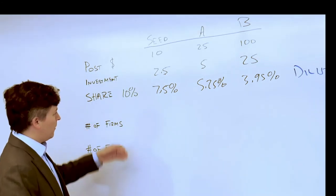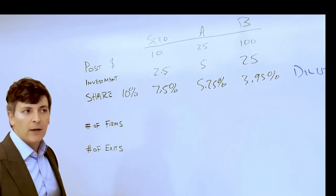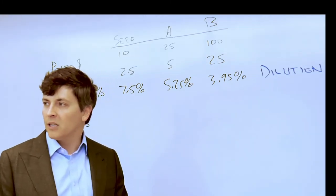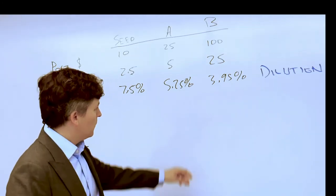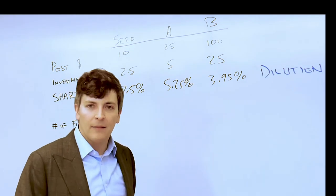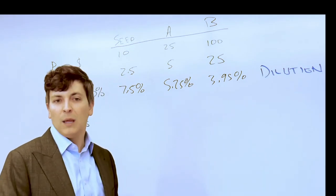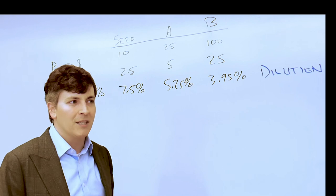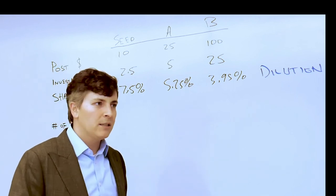But when a founder offers a joiner or offers you ten percent of the early stage equity, you need to take into account that that equity is going to be less than ten percent of what was promised after outside investors take a piece of the firm.